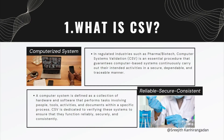In regulatory industries such as pharma and biotech, computer system validation is an essential procedure that guarantees computer-based systems continuously carry out their intended activities in a secure, dependable, and traceable manner. Now, what is a computer system? There are two terms — computerized system and computer system. Computer system is software and hardware, while a computerized system includes the people, the tools, the activities, and the documents around a specific process.